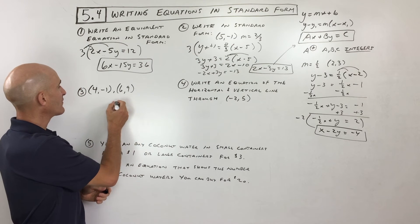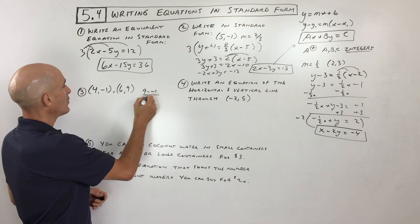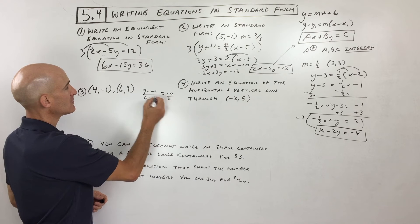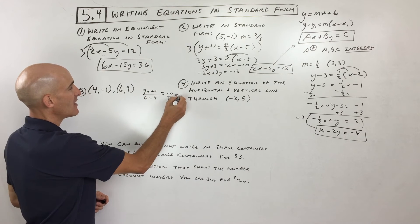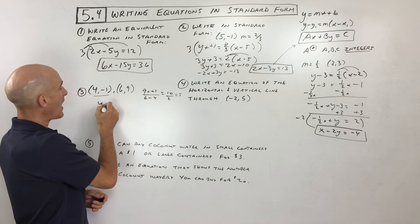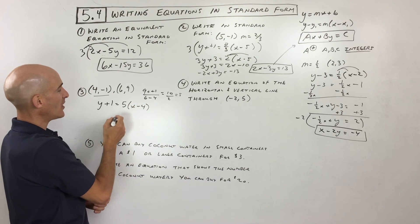So let me go ahead and do that. So we've got y2 minus y1, so that's 9 minus negative 1 over x2 minus x1. So that's 10 over 2, because remember subtraction is like adding the opposite. That gives us a slope of 5. So I'm going to use this point right here. So y minus negative 1 is y plus 1 equals the slope times x minus x1.